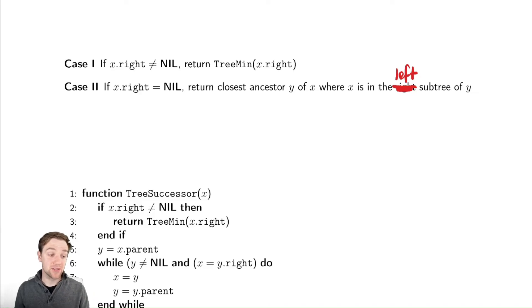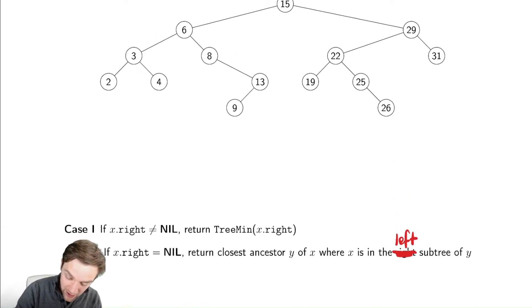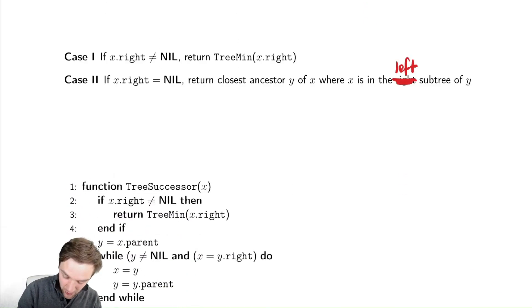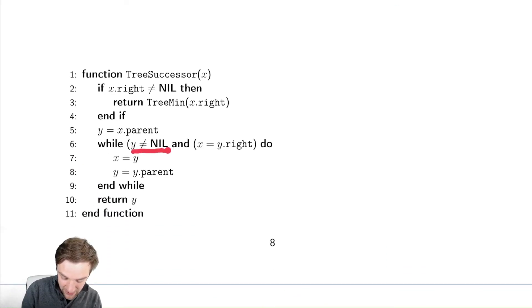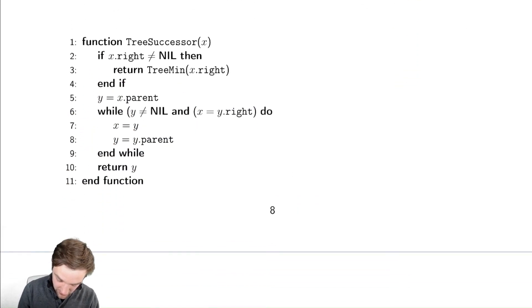So let's look at this code for successor. For successor, if x dot right isn't nil, if I can go to the right, find the minimum over there. And then if I can't do that, then what am I going to do? I'm going to find my parent, and then while I'm not going to the right, so while I'm going to the left, we are going to keep looping. So while I'm not nil, so I can still work my way up, and while I am still in the right subtree, I want to be in the left subtree. So for example, in this code up here, while I am still in the right subtree, I need to keep going up, and then eventually I will return.